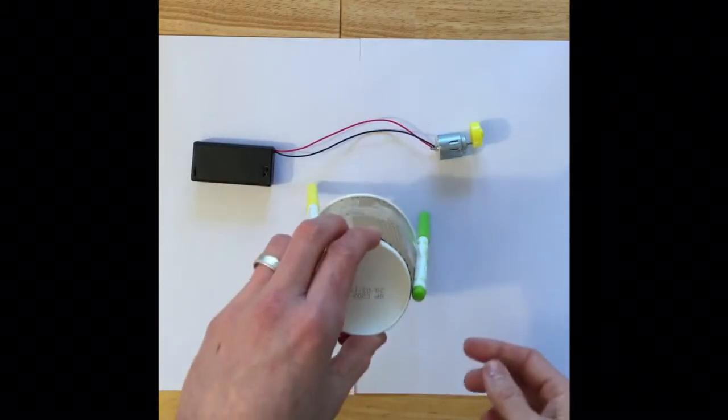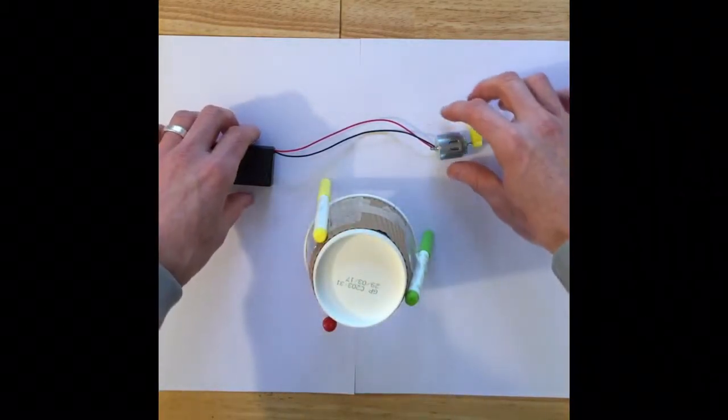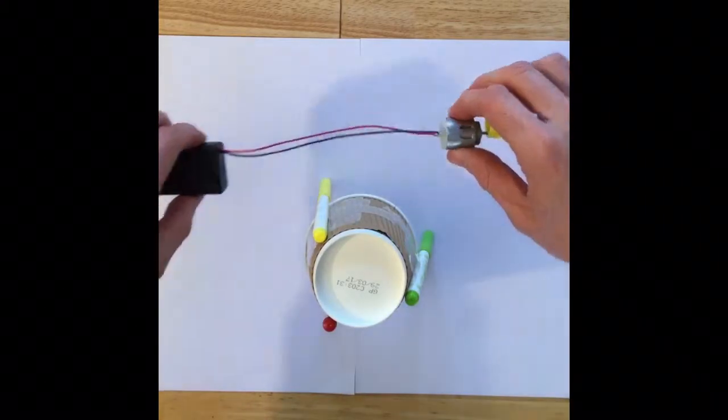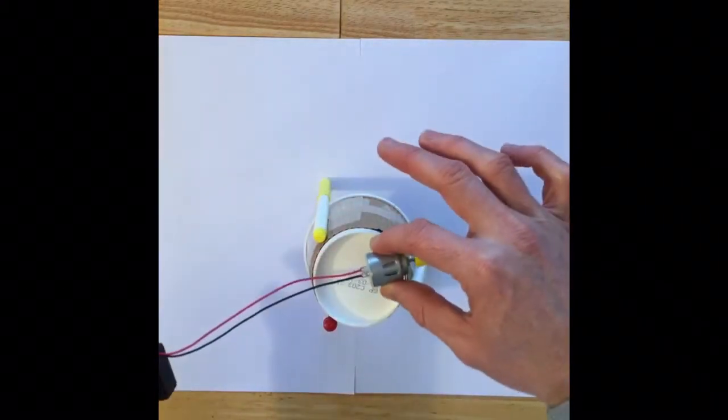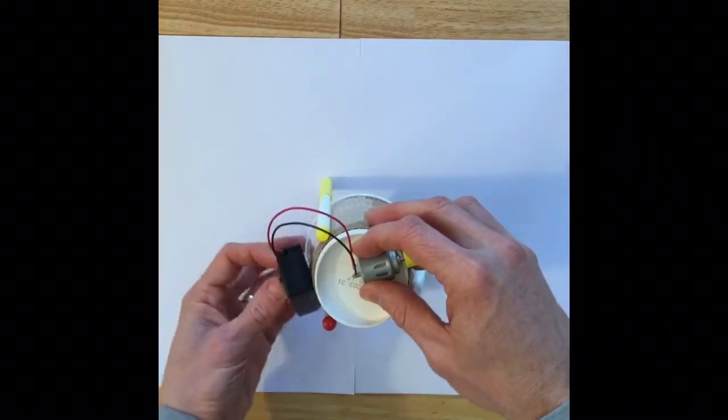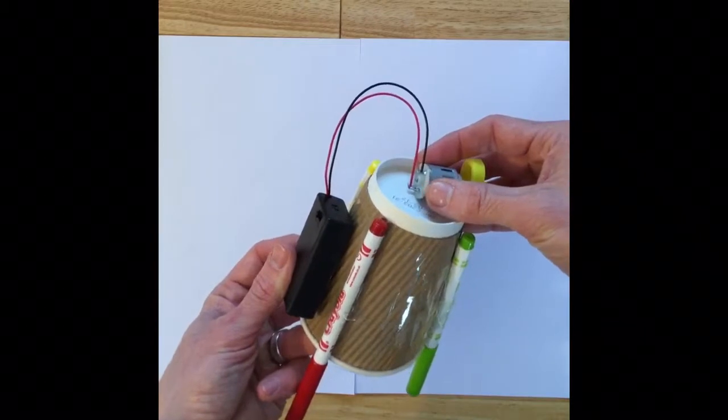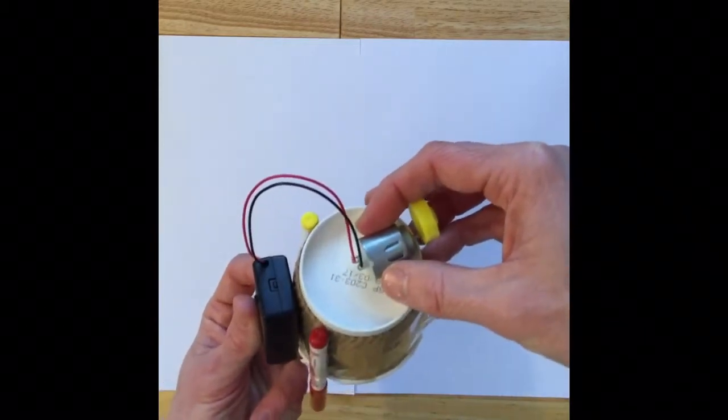Now what we're going to do is we want to attach the components, the simple circuit, to our doodle bot. So what we're going to do is we're going to keep our motor and it's going to sit on top, and then very simply our pack just goes on the side. I'm going to have my pack sellotaped or glued onto the side and I'm going to have my motor sellotaped or blue tacked on the top.